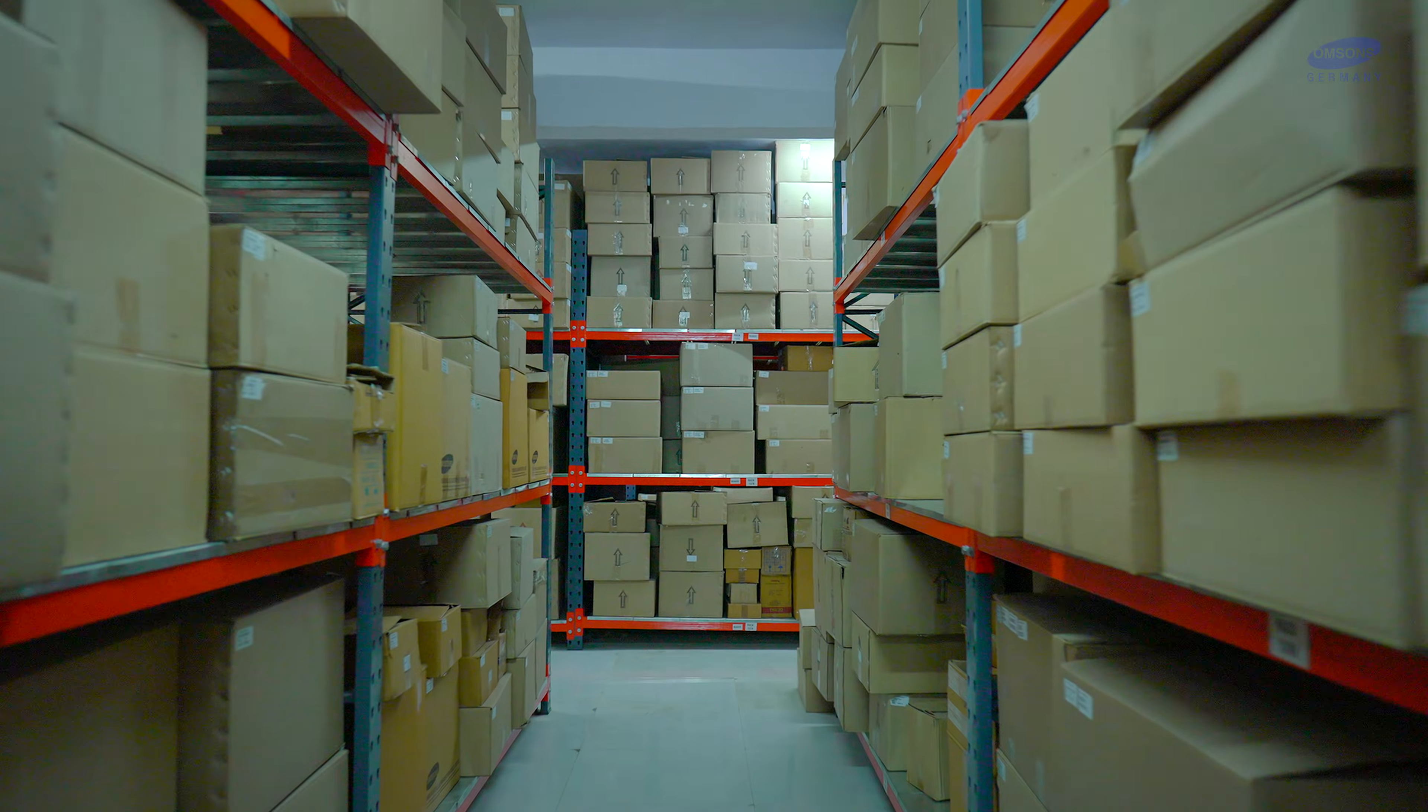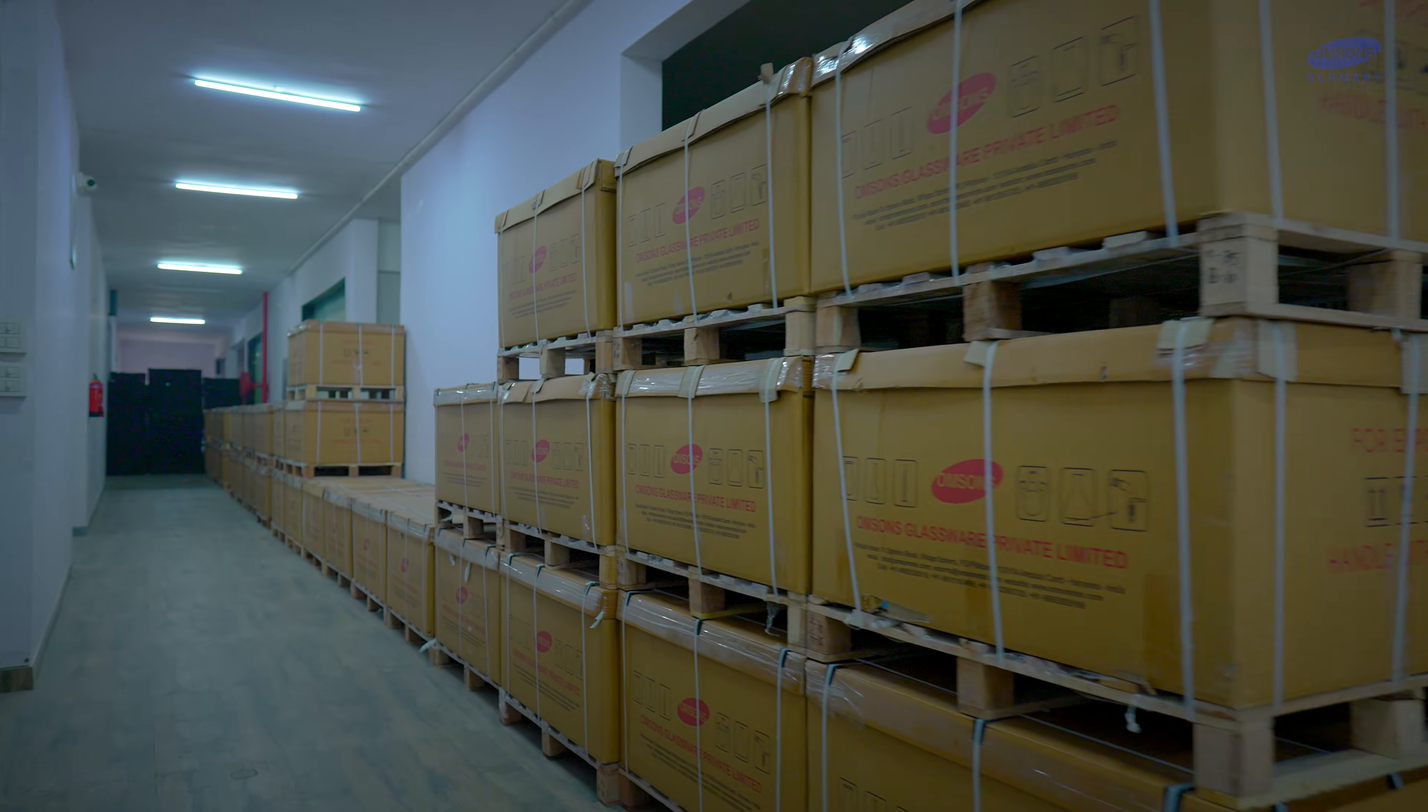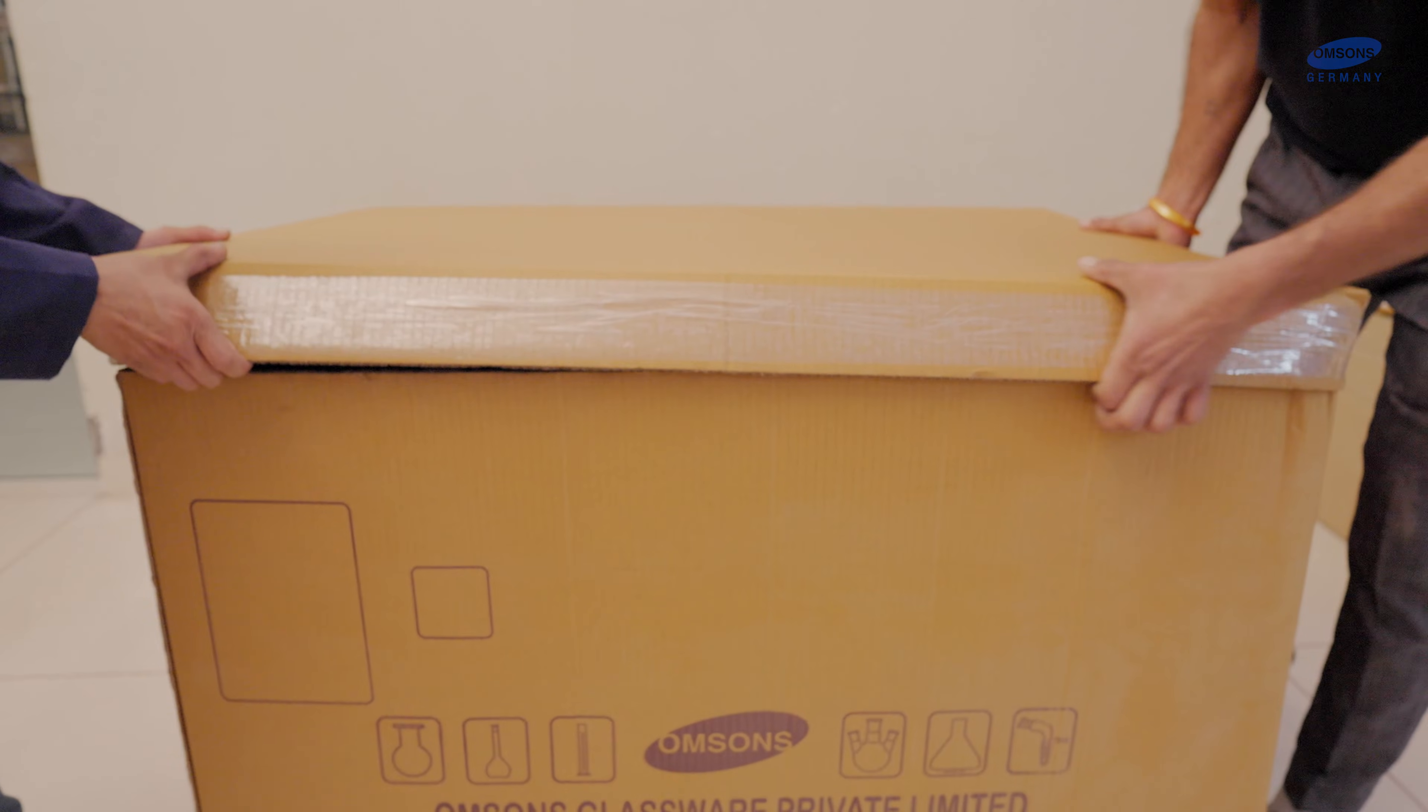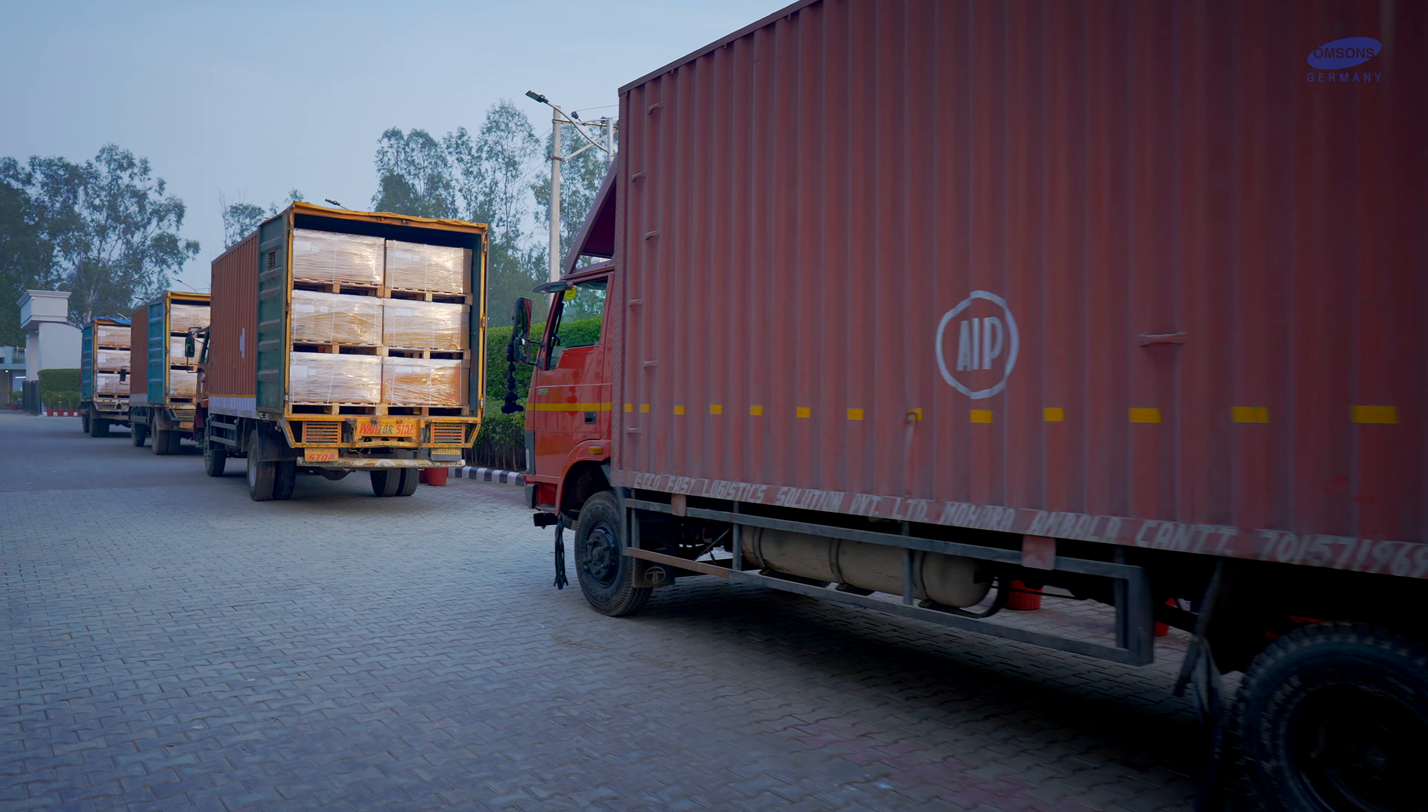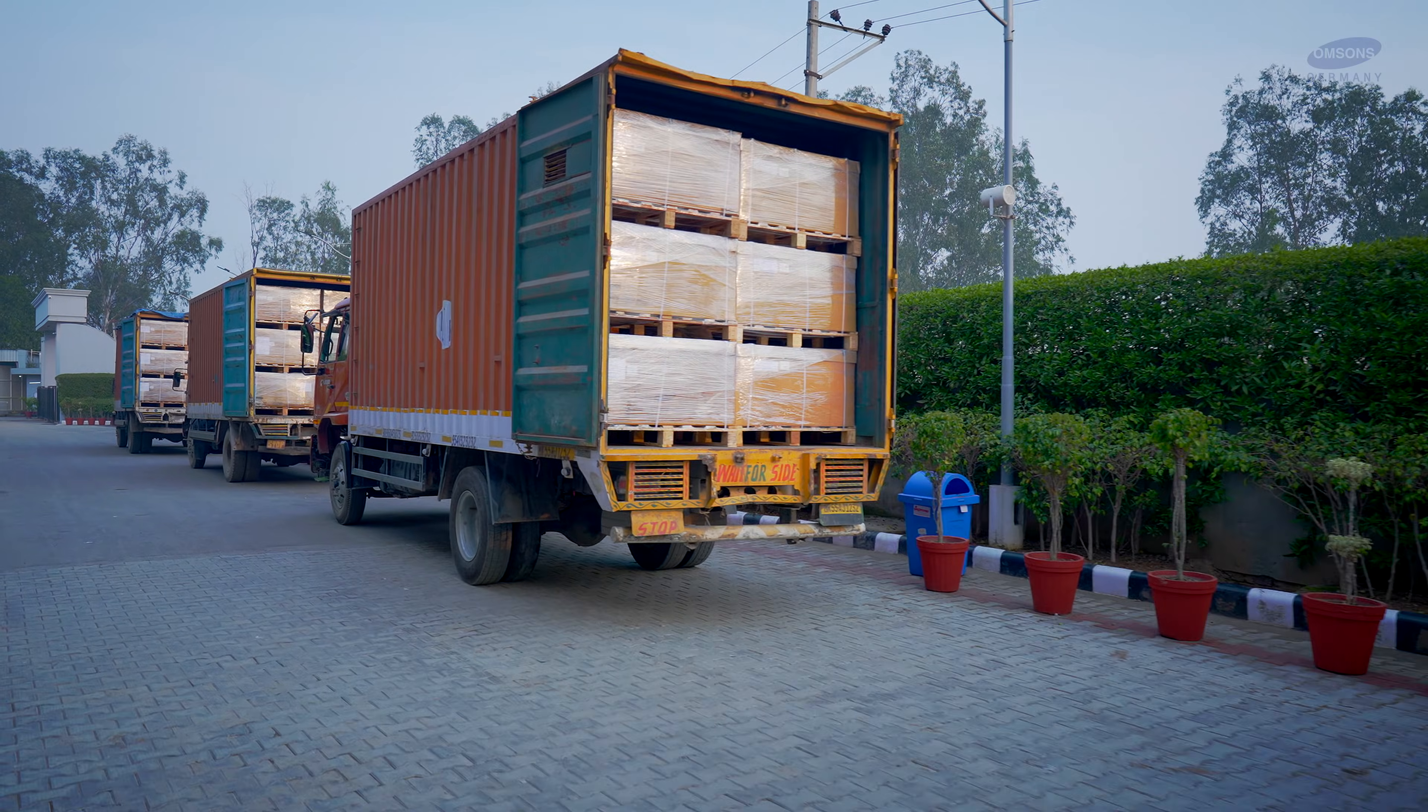A sizable stock of semi-finished products is maintained to ensure prompt production and efficient dispatch of bulk orders. With enormous infrastructure and commodious storage facility, Omson's has the capacity to dispatch 20 containers in a month.